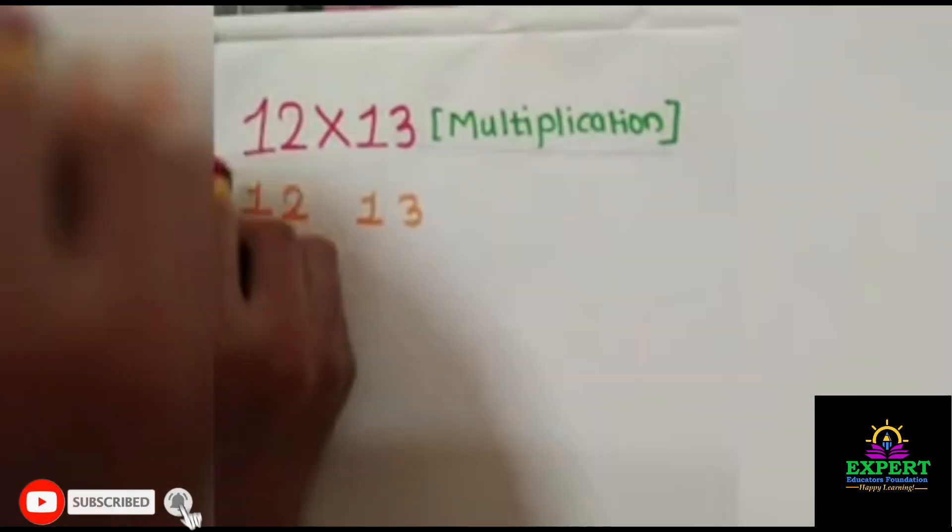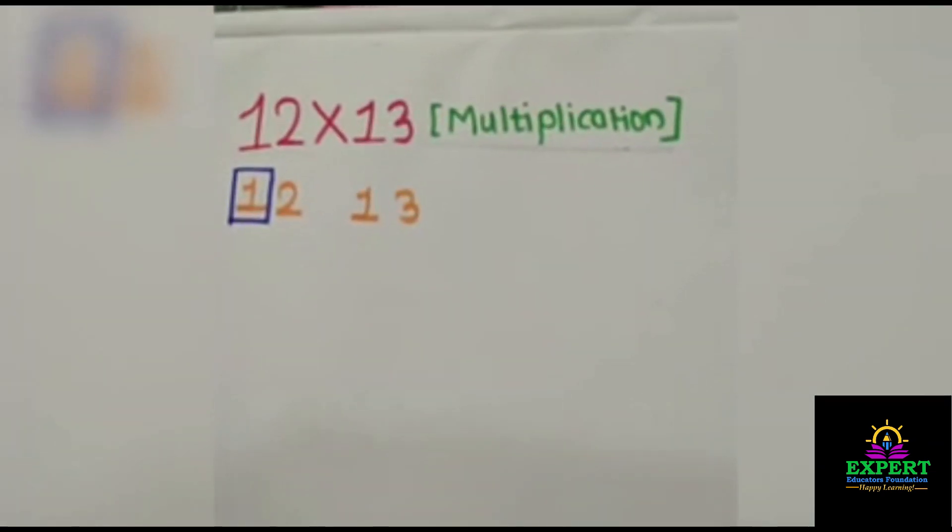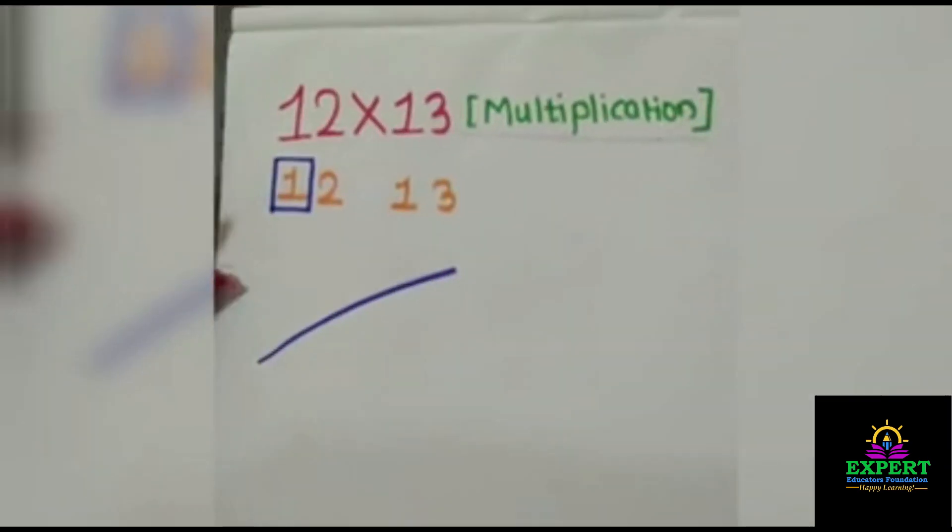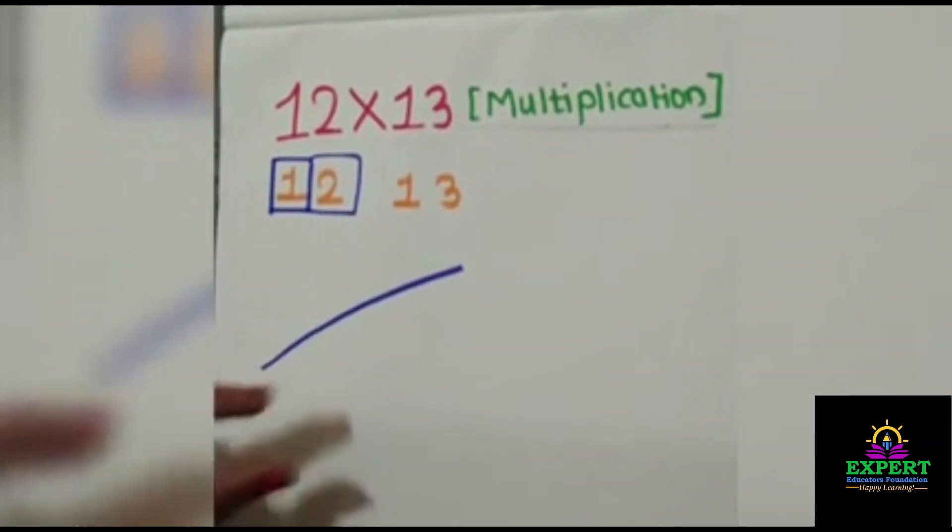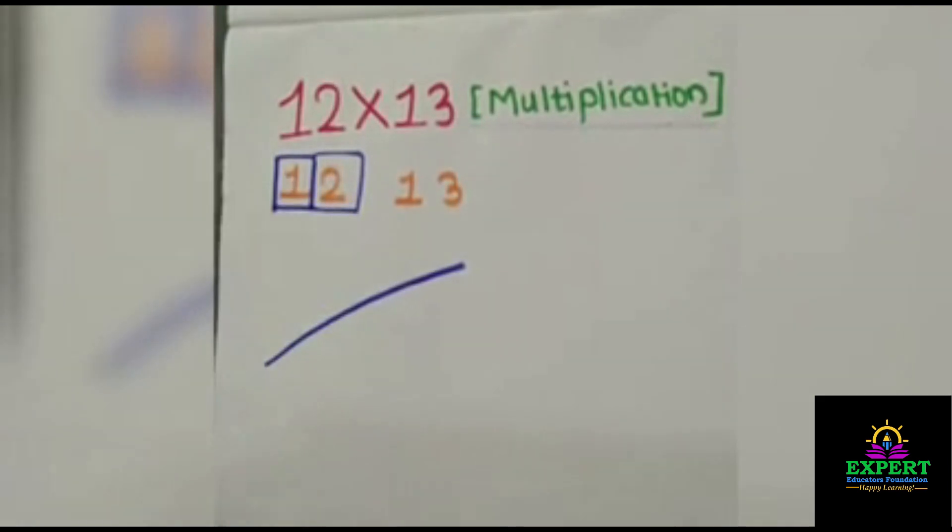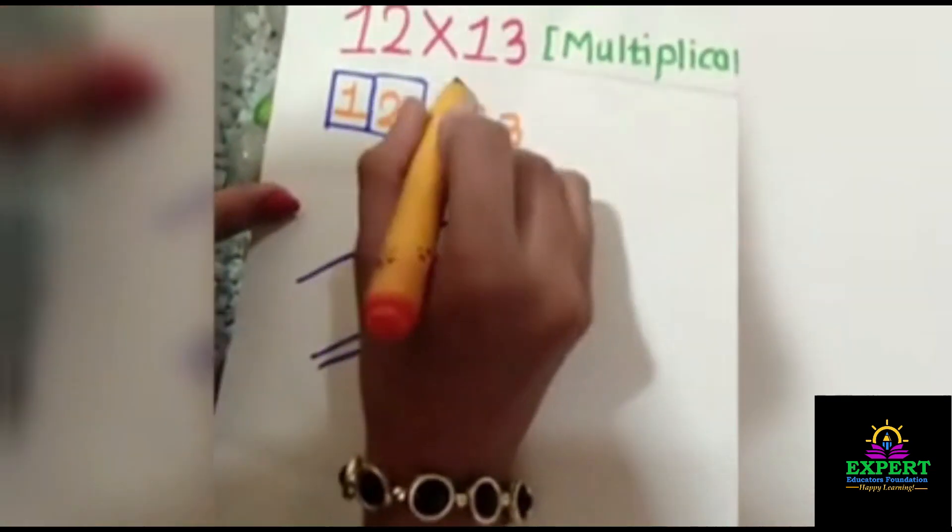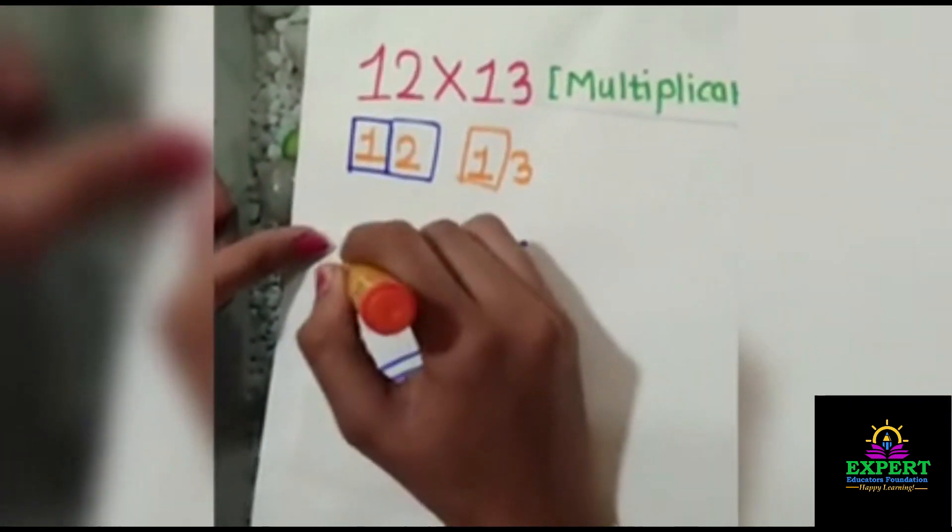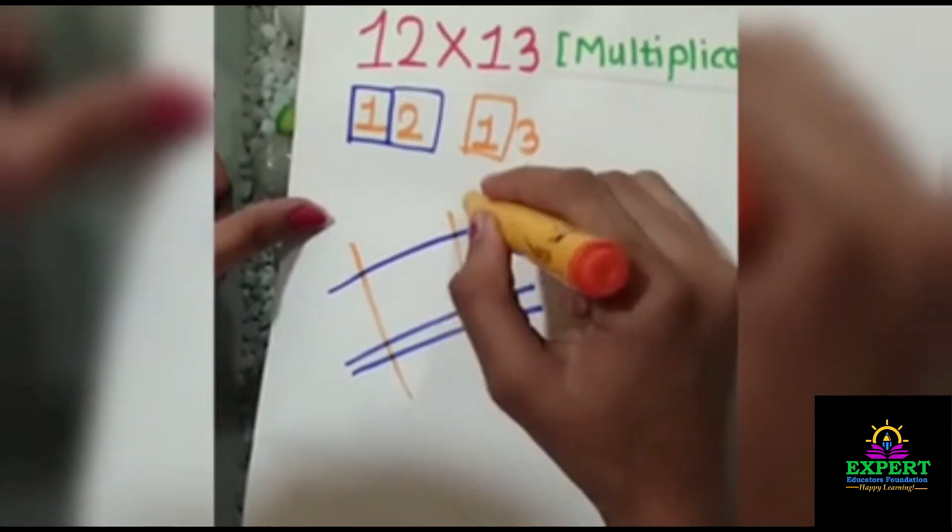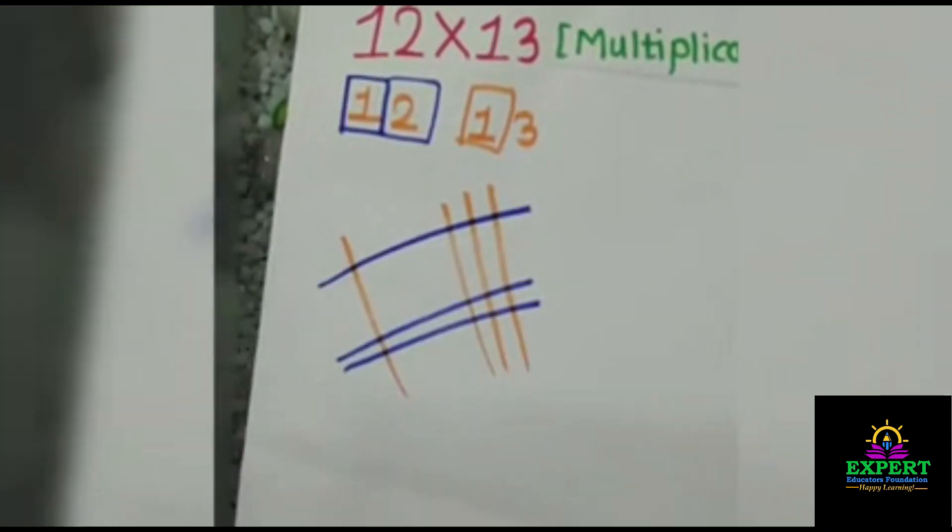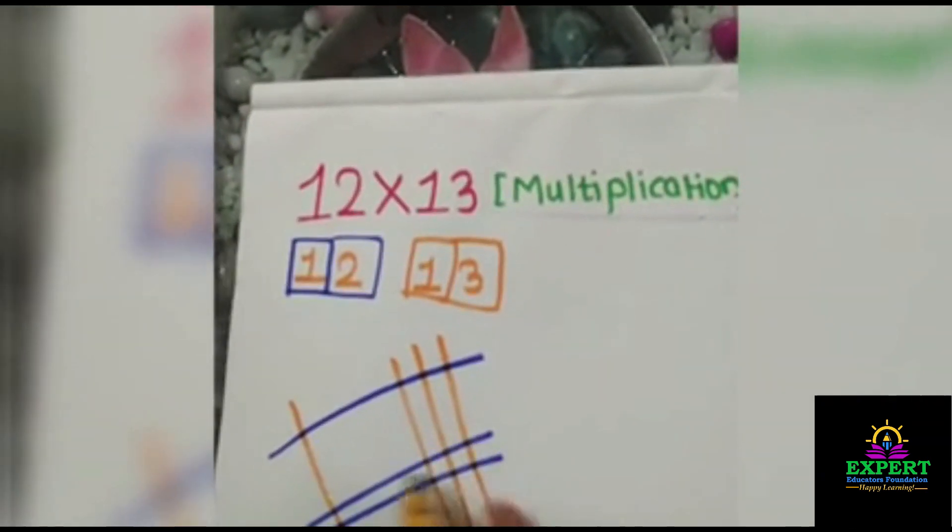Now 4 digits are given to us. So for 1 number we will draw 1 sleeping line. The next number is 2. Keeping some distance, you have to draw 2 sleeping lines. The next number is 1. So now we have to draw vertical lines. For 3 we will draw 3 lines. And now we have to count the numbers. Now let's count the intersecting points.